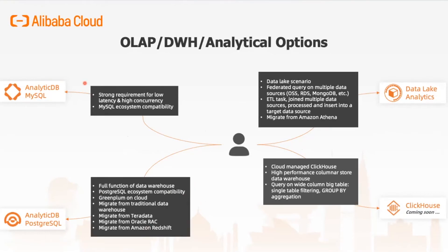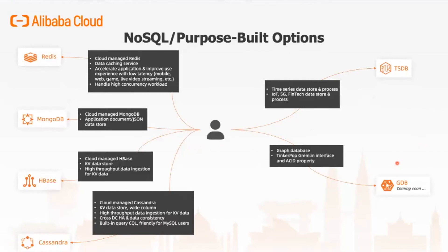You can stream data from MySQL to AnalyticDB for MySQL in real-time, and with fast analytics on it, you can achieve end-to-end real-time analytics. If you want to build a data lake or do federated queries across different data sources, you can use Data Lake Analytics. If you have ClickHouse on-premise that you want to migrate to Alibaba Cloud, you can look at our managed ClickHouse service. Under the NoSQL scenario, we have many different engines: Managed Redis, Managed MongoDB — which is a partnership with MongoDB company to provide the original MongoDB binary — Managed HBase, Managed Cassandra, Managed TSDB for time series data, and a Managed Graph database compatible with TinkerPop Gremlin interface.